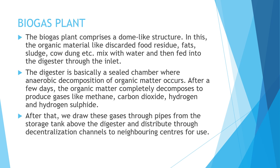The biogas plant comprises a dome-like structure. Organic material such as discarded food residue, fats, sludge, and cow dung is mixed with water and fed into the digester through the inlet. The digester is a sealed chamber where anaerobic decomposition of organic matter occurs. After a few days, the organic matter completely decomposes to produce gases like methane, carbon dioxide, hydrogen, and hydrogen sulfide. These gases are drawn through pipes from the storage tank above the digester and distributed through decentralized channels to neighboring centers of use.